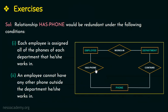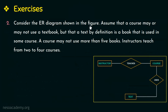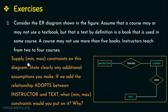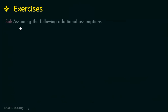Moving on to the second question in this video. Consider the ER diagram shown in the given figure. Assume that a course may or may not use a textbook, but a text by definition is a book that is used in some course. A course may not use more than five books, and instructors teach from two to four courses. They are asking us to supply min-max constraints on this diagram. If we add the relationship adopts between instructor and text, what min-max constraints would you put on it and why?